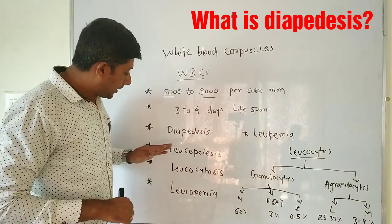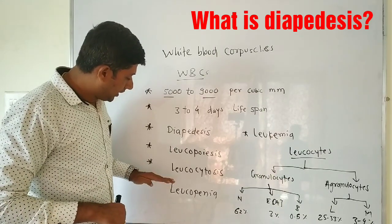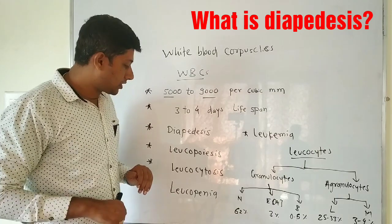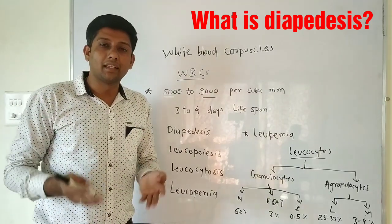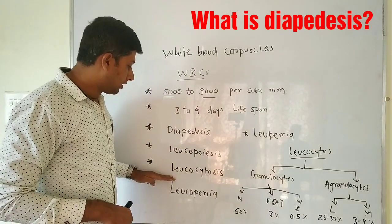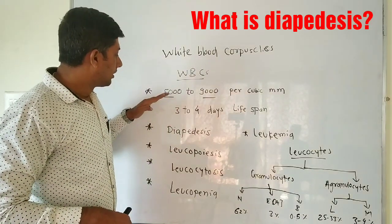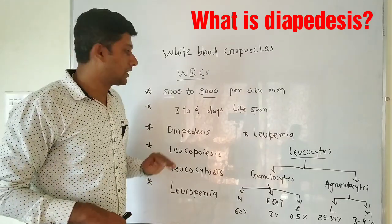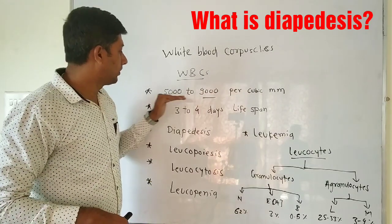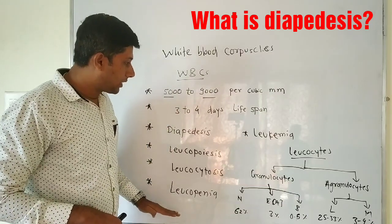The next term to discuss is leukocytosis. The process of increase in the count of WBCs above the normal range is called leukocytosis. A decrease in the number of WBCs below the normal range of 5,000 to 9,000 per cubic mm is called leukopenia.